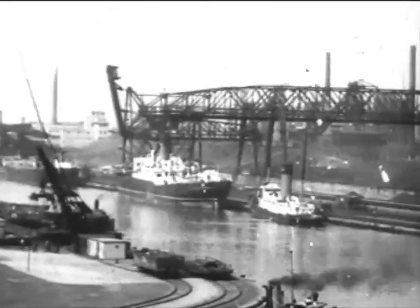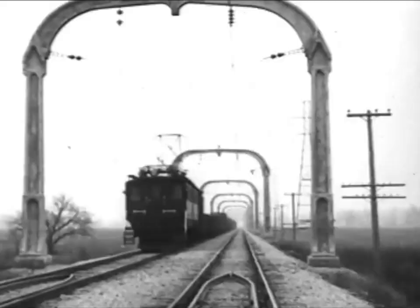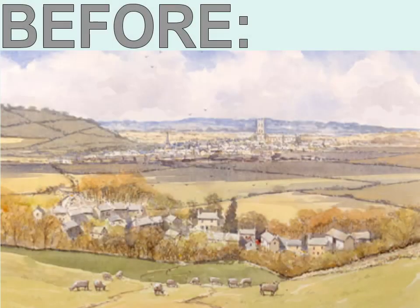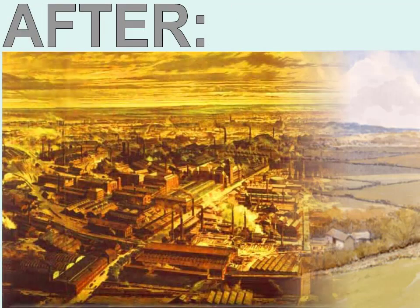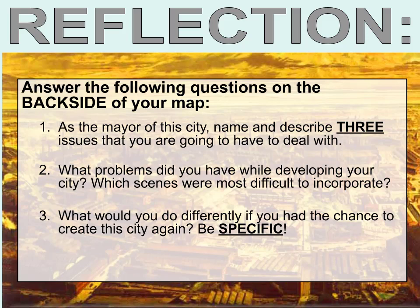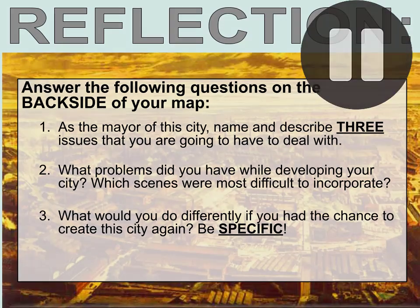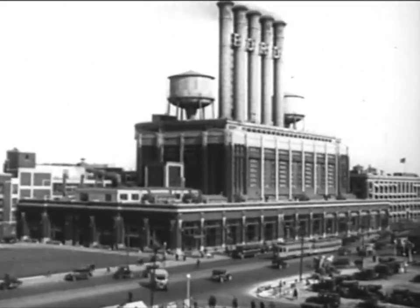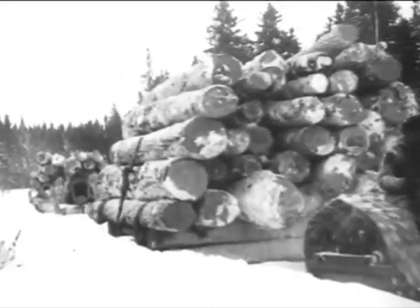What you just experienced was a simulation of the changes that occurred during a time period known as the Industrial Revolution. What you might have noticed is that things happened very quickly — almost too quickly for people to be able to keep up. This is what life looked like before we started this activity, and this is what things looked like after this revolution. Now it's time to reflect on your experience. On the back side of your map, answer the following questions: 1. As the mayor of the city, name and describe three issues you are going to have to deal with. 2. What problems did you have while developing your city? Which scenes were most difficult to incorporate? 3. What would you do differently if you had the chance to create this city again? Be specific. I hope that you noticed the difficulty of planning out a city during industrialization — 'planning' in quotation marks, because people in England and other industrialized countries didn't have the opportunity to plan ahead.